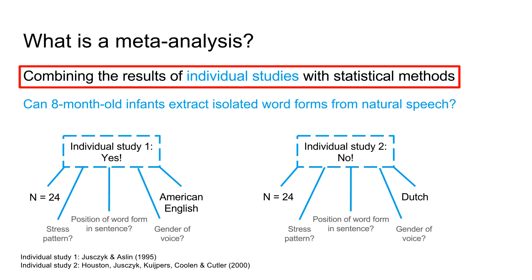In addition to weighting, meta-analysis also allows us to assess the relative influence of different moderator variables. In this example, consider that apart from infants' native language, factors like whether infants were presented with a male or a female voice, or whether the critical word occurred sentence-initially or sentence-finally, could have impacted the results.